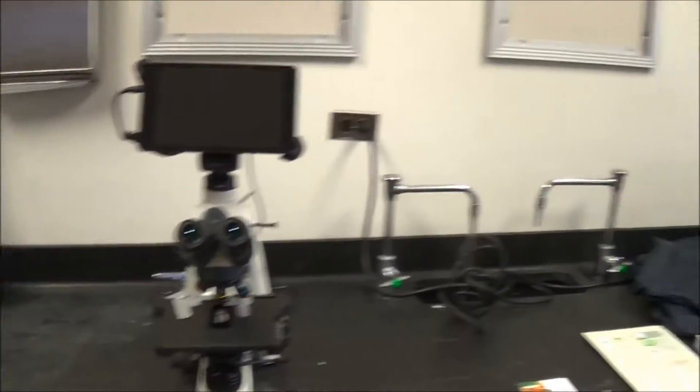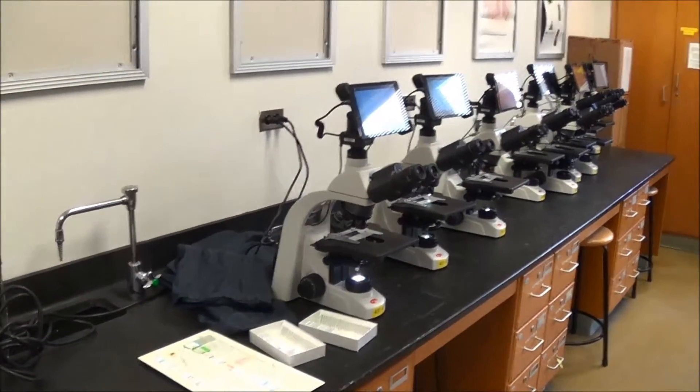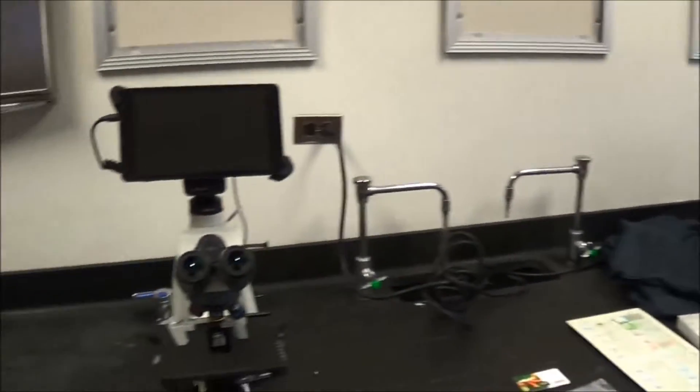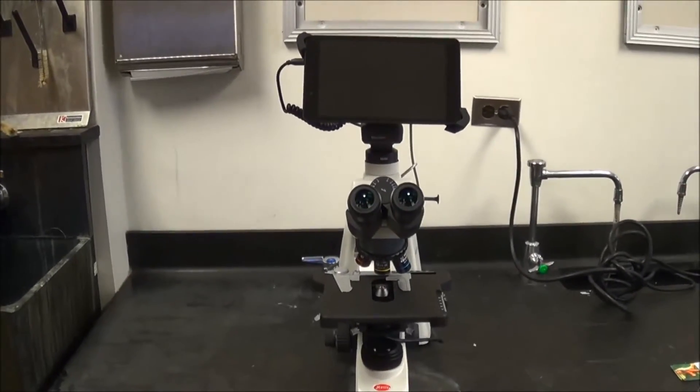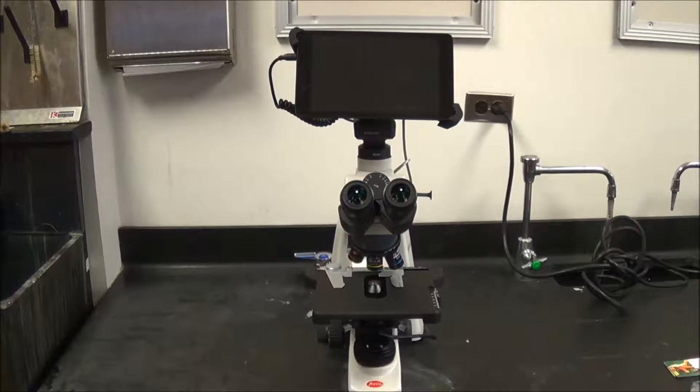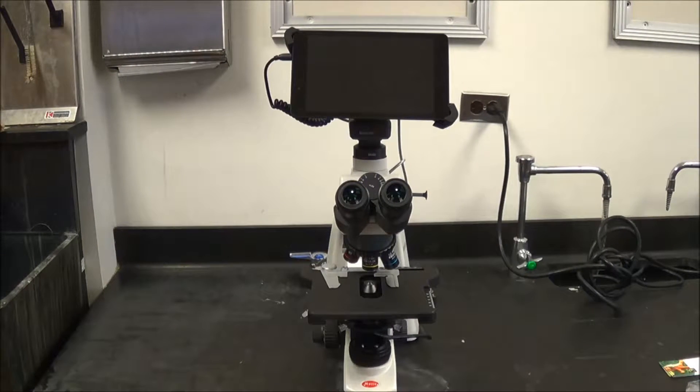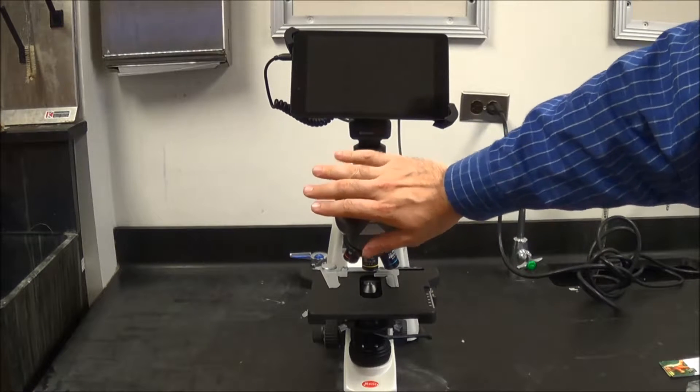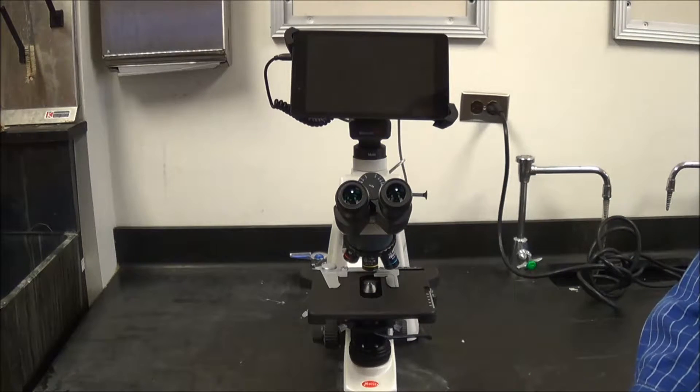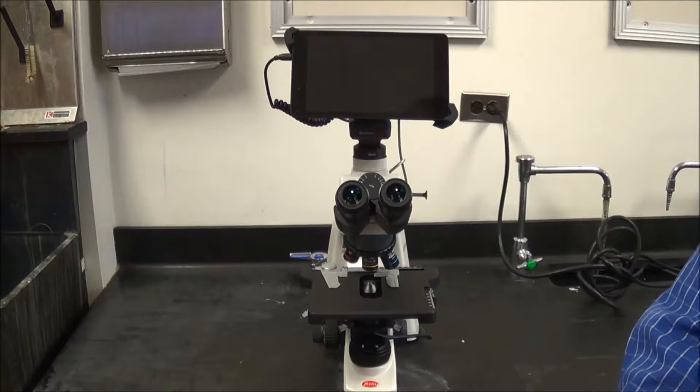For instance, in this class, the microscopes are being kept here along this unused bench. In some of the other classrooms, they're on a different bench. Some of them can actually be kept in some of the cabinets, but the doors are not being closed on the cabinets so that they don't hit the oculars. So wherever the microscopes were initially, please make sure that the students bring them back there.